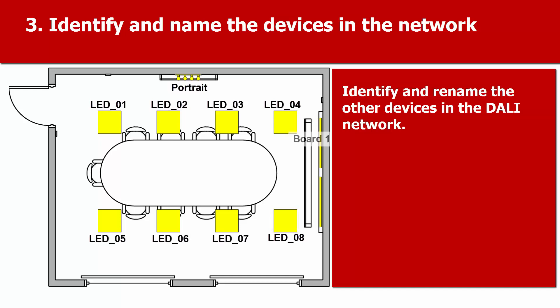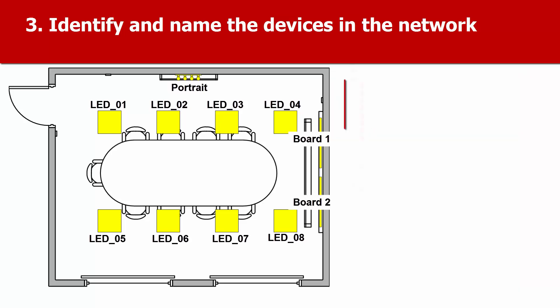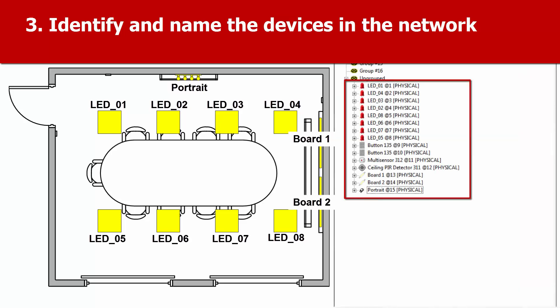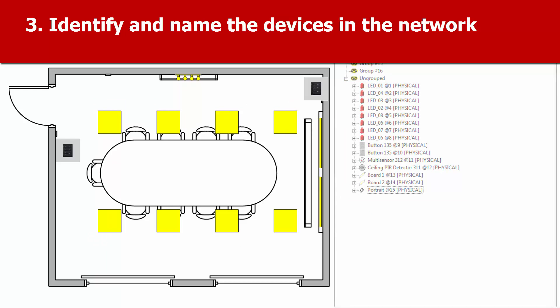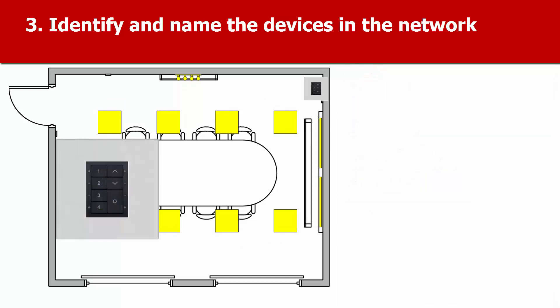Do the same for the electronic ballasts which control the fluorescent lights. Here you can see those devices named but still listed as ungrouped. We also need to identify the button panels so that we know which is which.